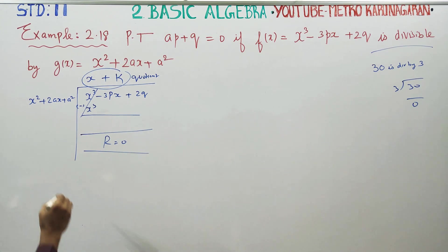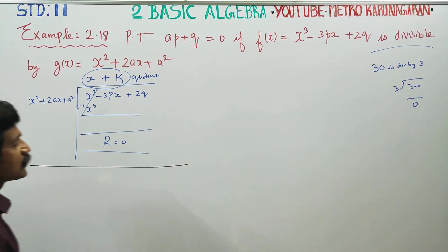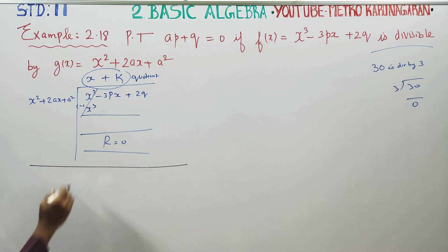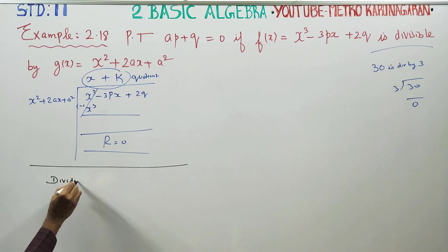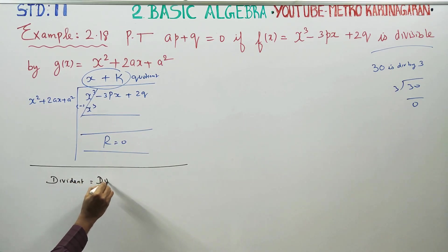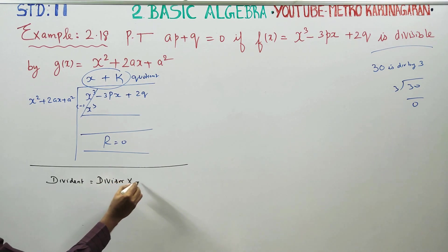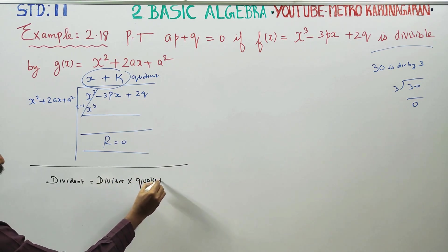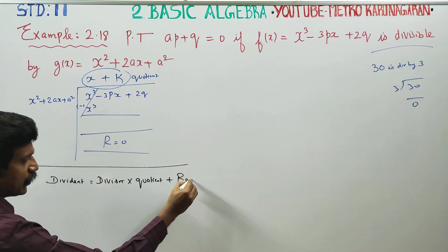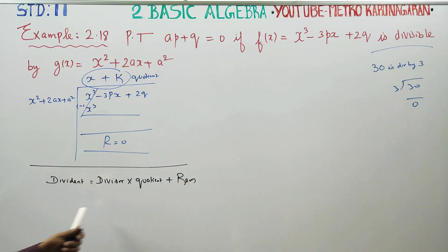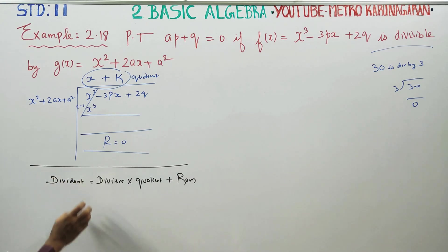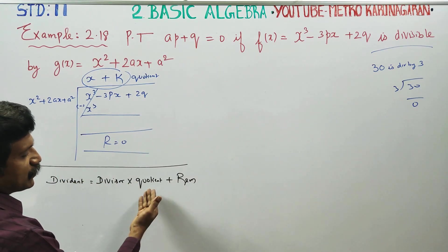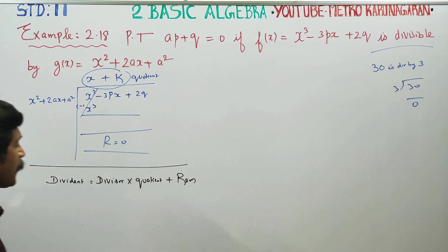This is the Euclidean Division Algorithm — a concept from 10th standard. The formula is: Dividend equals Divisor into Quotient plus Remainder. This is the algebraic setup.